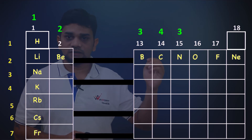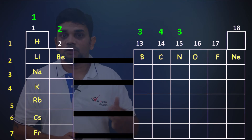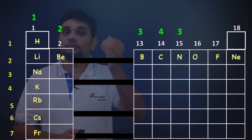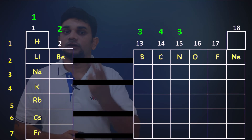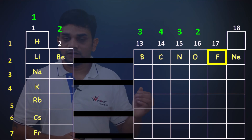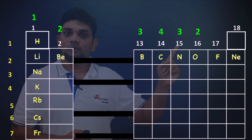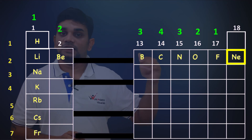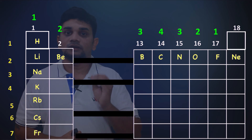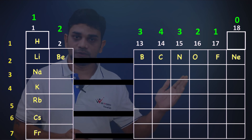Oxygen is in group 16 — six electrons in the outermost shell, so it accepts two electrons to complete the octet; valency is 2. Fluorine is in group 17 — seven outermost electrons, needs one more to complete the octet; valency is 1. Neon is in group 18 — eight electrons in the outermost shell; valency is 0. So valency increases up to 4 and then decreases to 0 across the period.